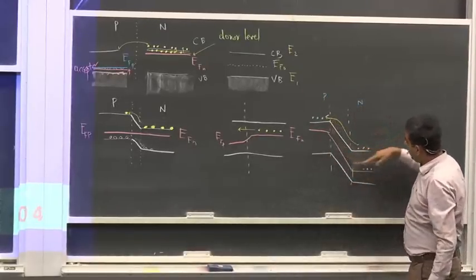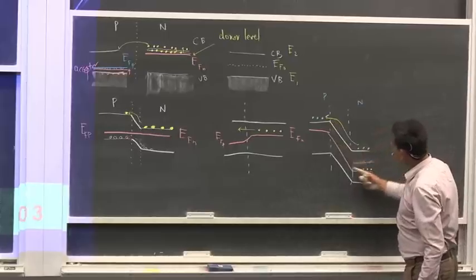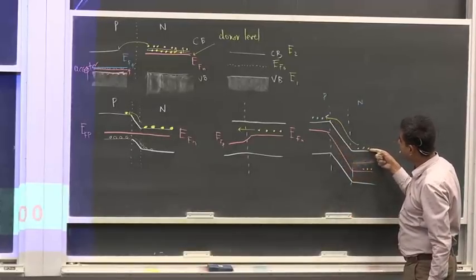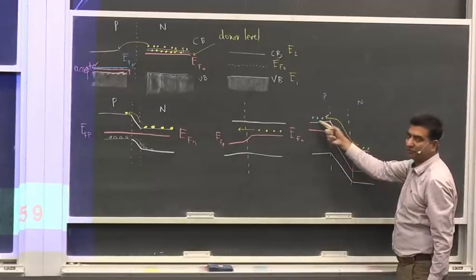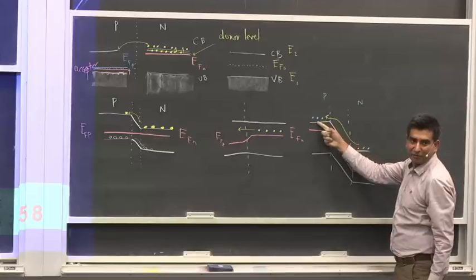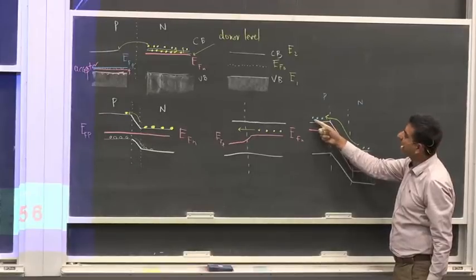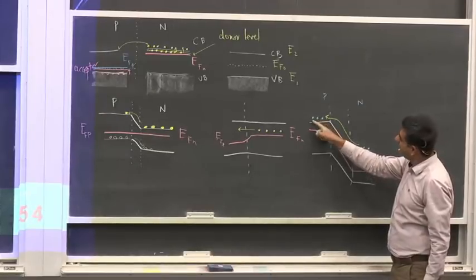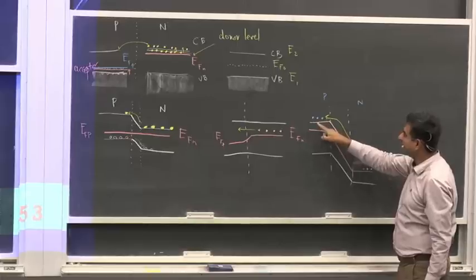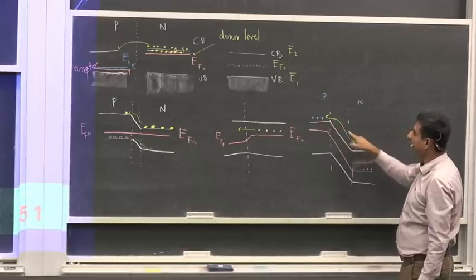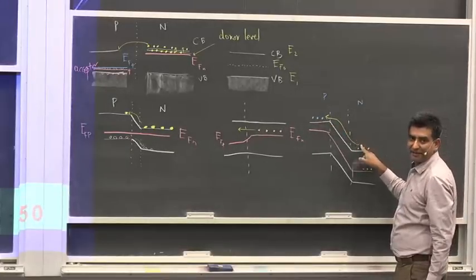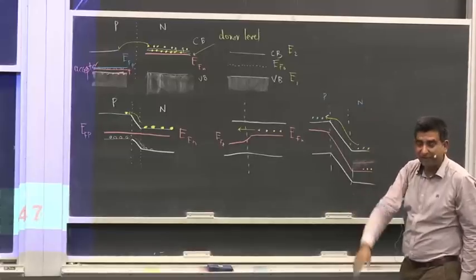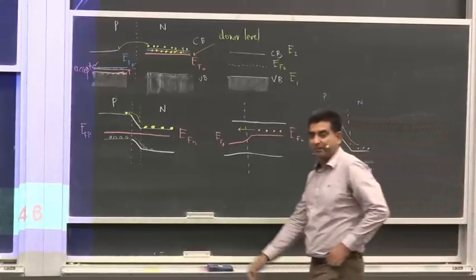The gradient becomes more uphill for majority charge carriers inside the n-type material to flow into the p-type material, and no conduction takes place. However, some minority charge carriers will find it easy and will cascade down like a waterfall from the p-type to the n-type material, but these are only a minute amount of charge carriers.